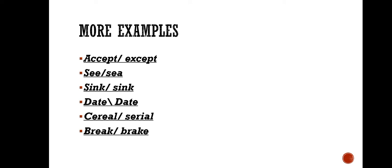See, sea, these are homophones. Then sink, sink, same spellings and meaning different are homographs. One sink and one sink which we call wash basin. Date, same spellings. One date and another date. Cereal, serial. One is food cereal, another is drama serial. Same pronunciation but different spellings so these are homophones. Break, brake, different spellings but same pronunciation so these are also homophones.